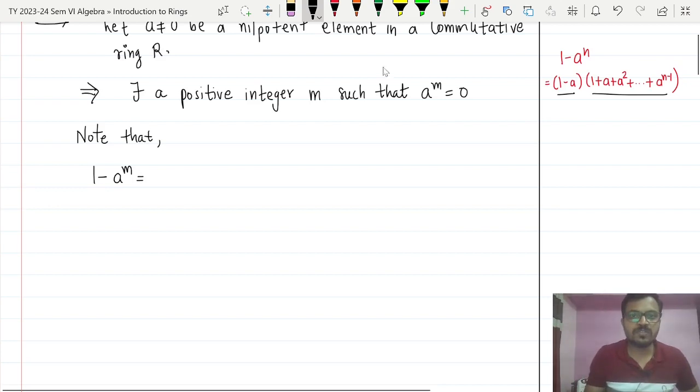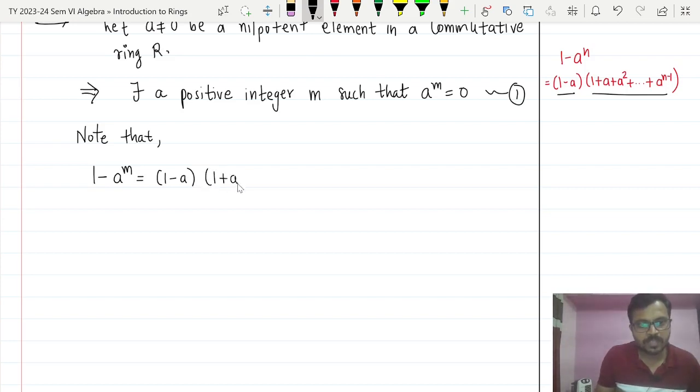If we use this formula then what will happen? This will be equal to 1 minus a times 1 plus a plus a square and this will be continued up to a raised to n minus 1. This implies, but the value of a raised to m is 0.